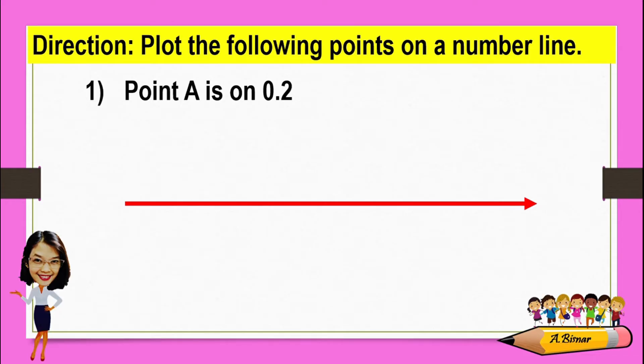For number one, point A is on 0.2. As you observe, the given is less than 1. Our ones place is 0, which means this will be between 0 and 1.